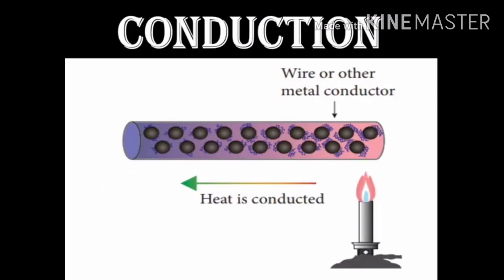See the diagram for conductors. In metal conductors, heat is conducted easily. The atoms and molecules are in a tight arrangement and are vibrating, so it is easy to transfer heat from one end to the other.